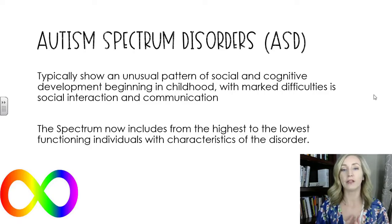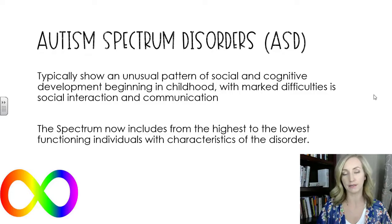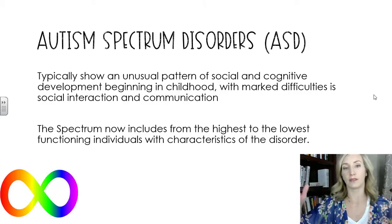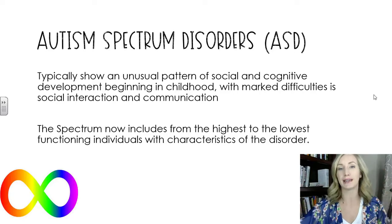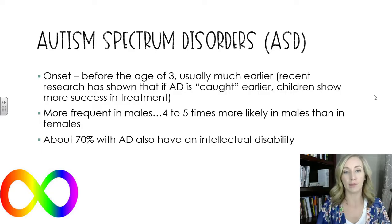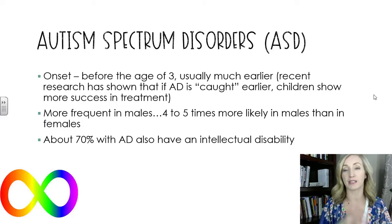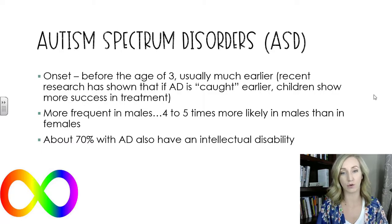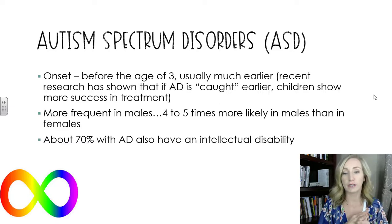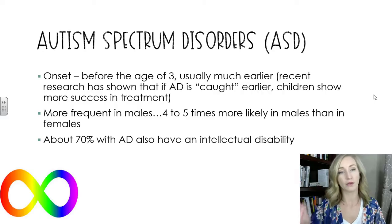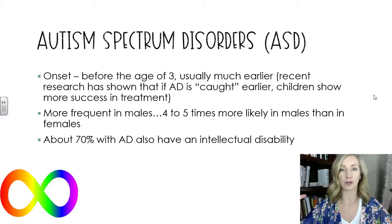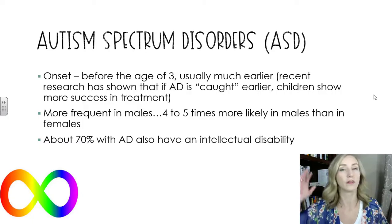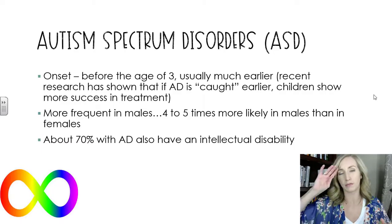The spectrum now includes the highest to the lowest functioning individuals with characteristics of autism. The biggest change with the DSM-5 is that it is a spectrum and it's much wider now, including at the high end Asperger's syndrome. Onset before the age of three is normally when you see characteristics. Research has shown that if ASD is caught earlier, children show more success in treatment. It is four to five times more likely in males than females, and about 70% of those with ASD also have an intellectual disability. The intellectual component is not always present, which is a big reason why it is a spectrum.